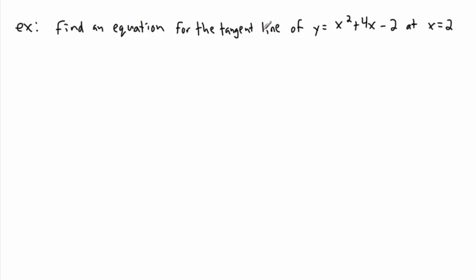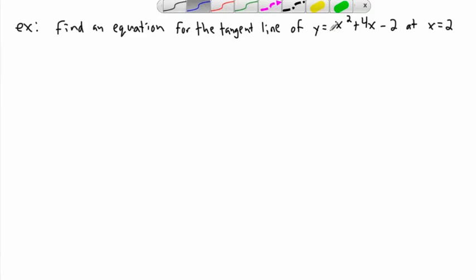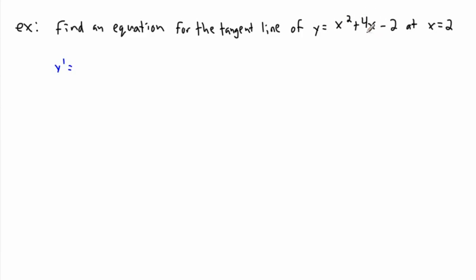We want to find the equation for the tangent line of the graph y = x² + 4x − 2, evaluated at x equals 2. I want to do it by hand. So first I need to find the slope of the tangent — that means finding Y prime. I need the derivative because I need to know what the slope of this tangent line is at this point.